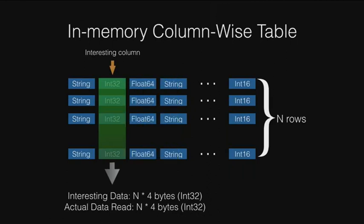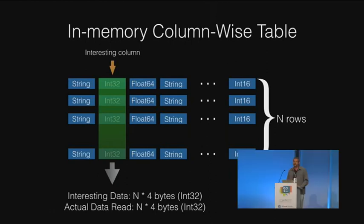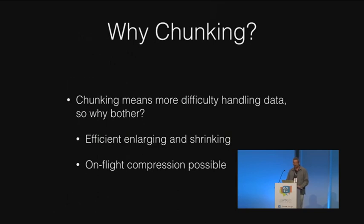In the column-wise approach, if you store the data in the same column sequentially, you will be bringing to the cache only the exact amount of information that you need. This is the rationale behind why column-wise tables are interesting.